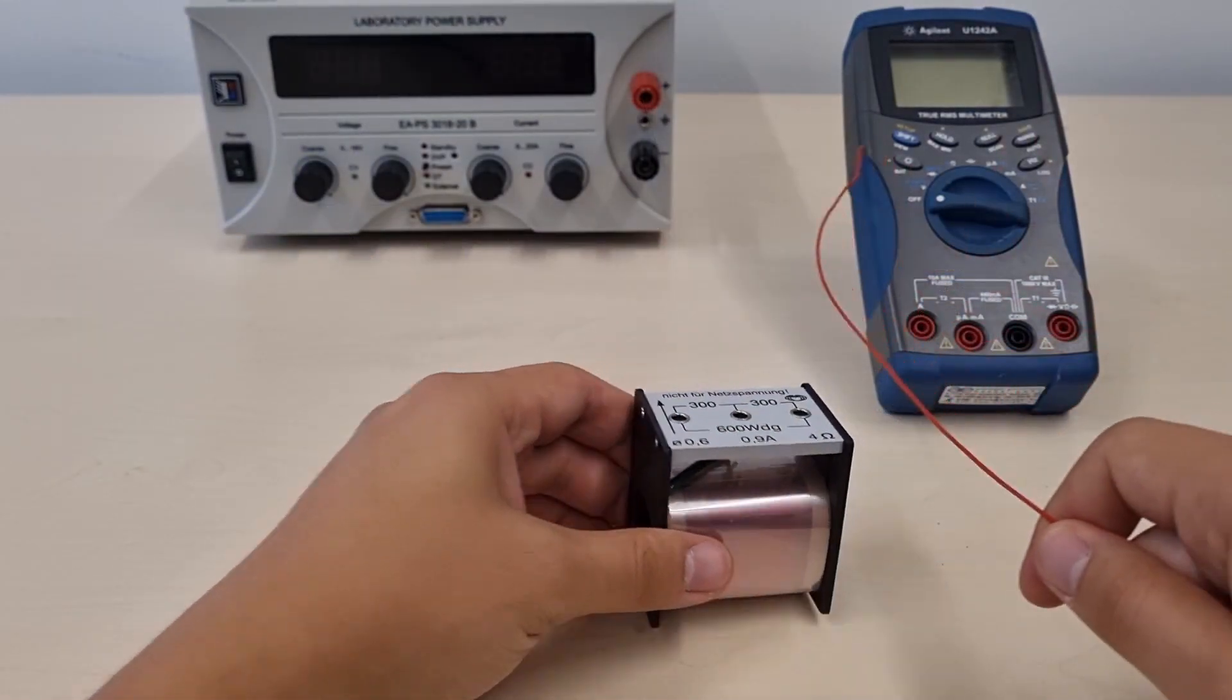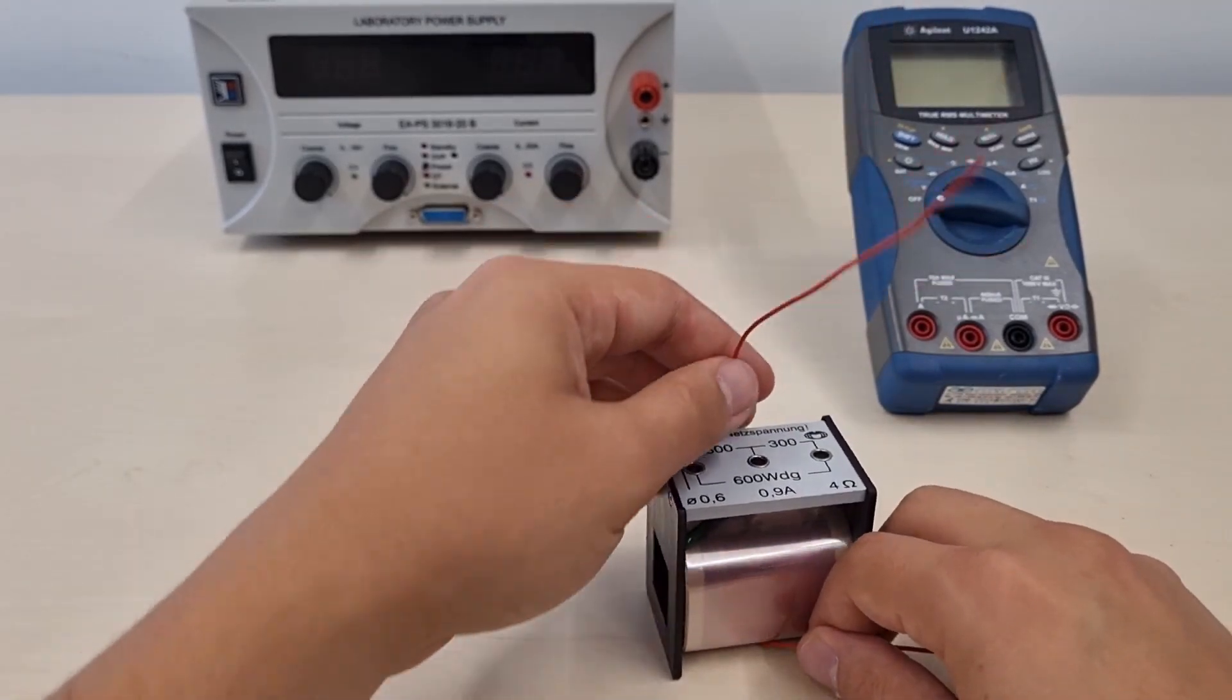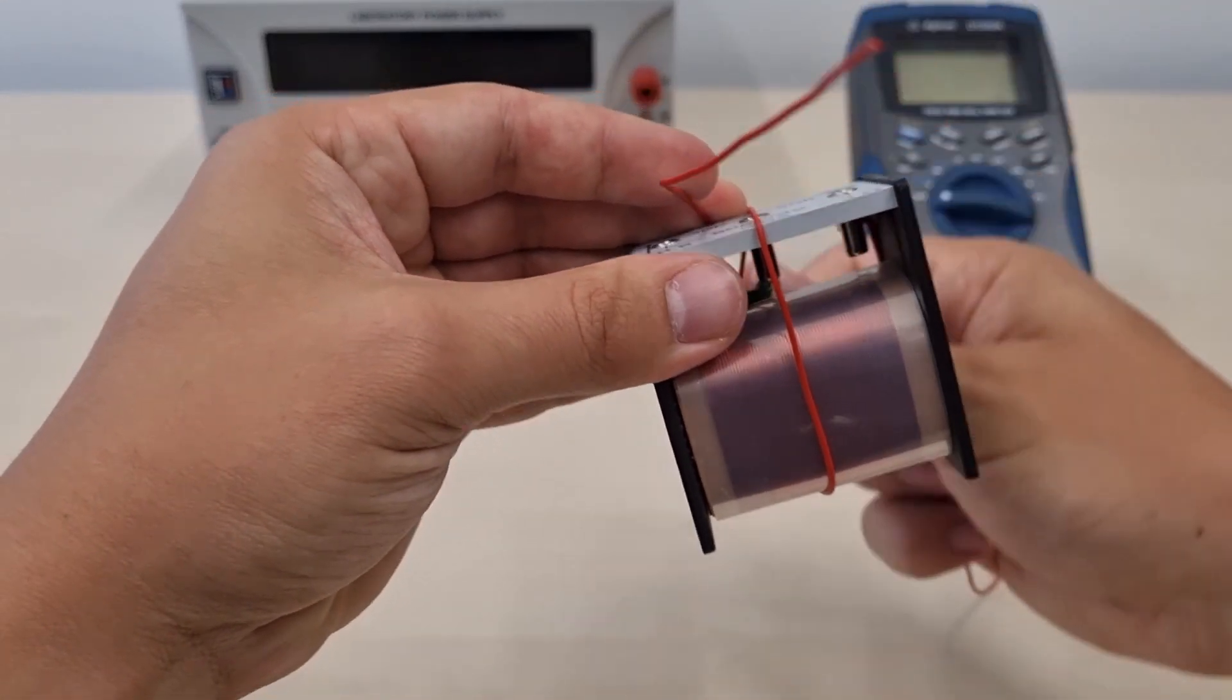In the next case we wrap our wire two times around our solenoid. Now we can see that the induced current doubles.